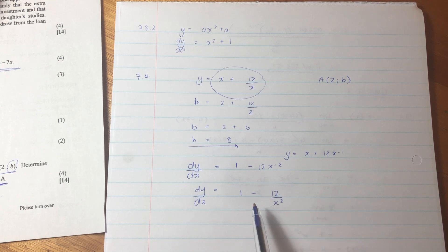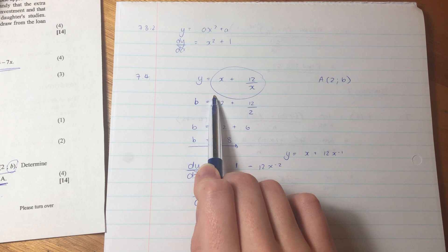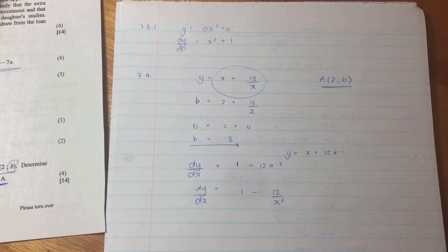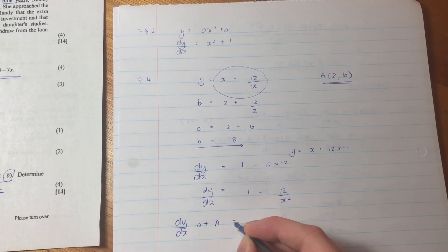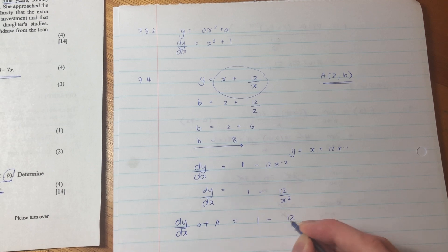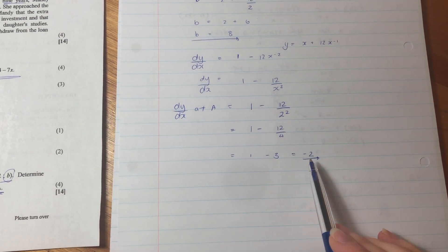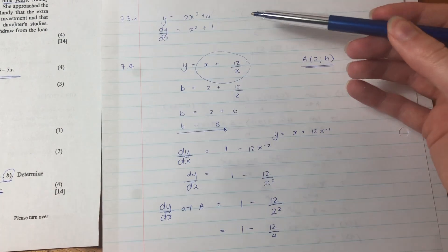So dy by dx, the coefficient there is 1, then here it's going to be negative 12x minus 2, so it's going to be 1 minus 12 over x squared. So that is dy by dx. So now we know that this is the equation of the derivative at, well not at a point yet, of this y graph. But what they asked is they wanted it specifically at a. So let's get dy by dx at a. So at a it is 1 minus 12 over 2 squared, which is 1 minus 12 over 4, which is 1 minus 3, which equals negative 2.